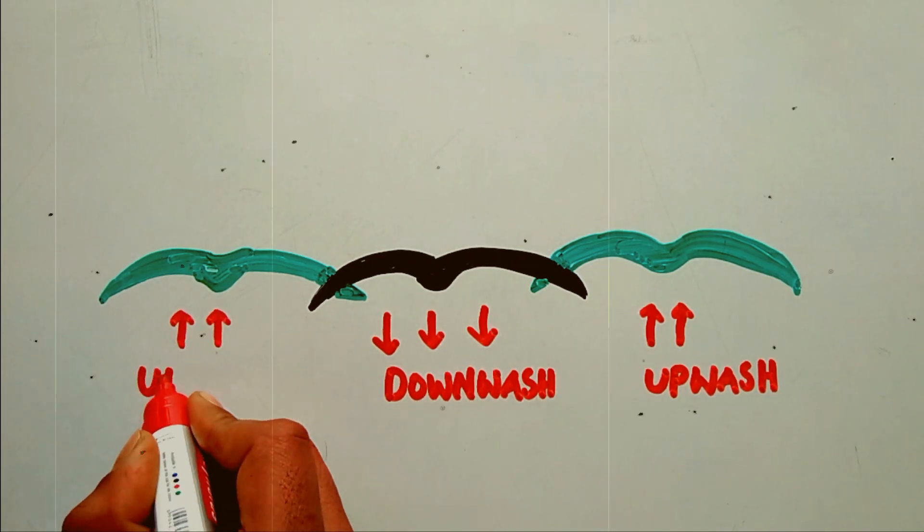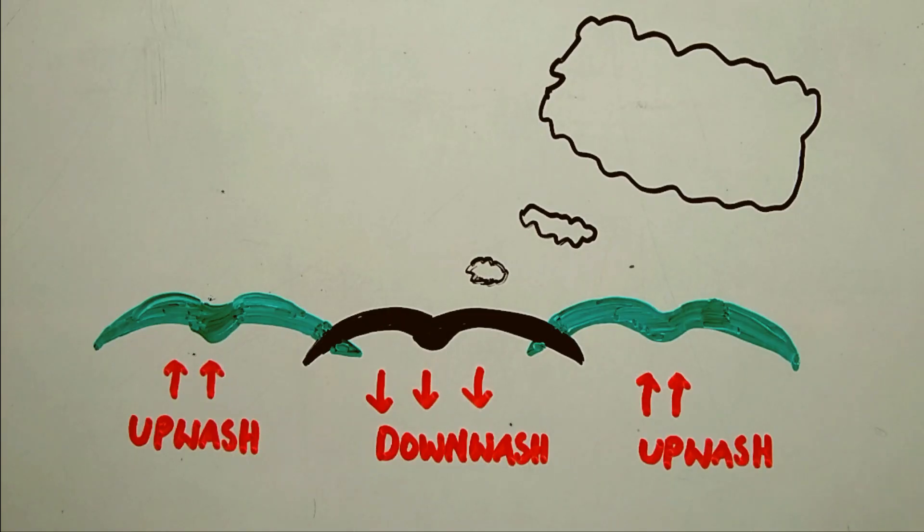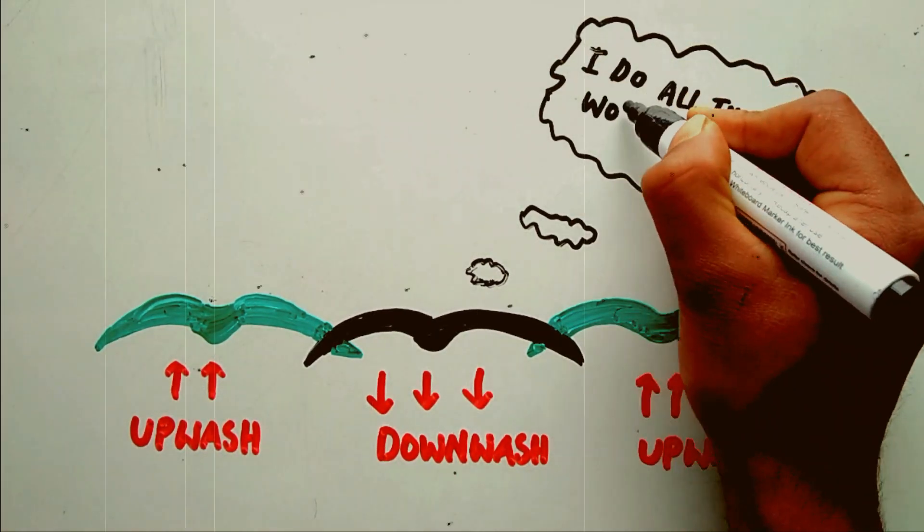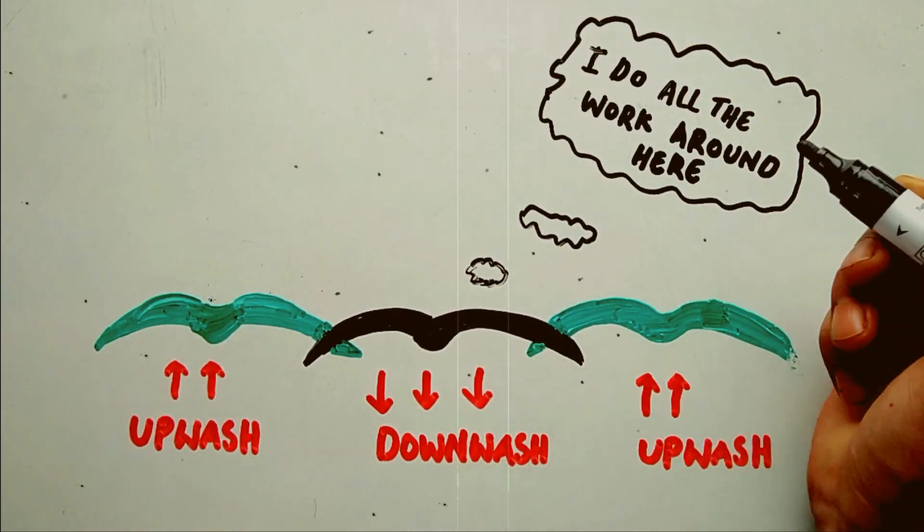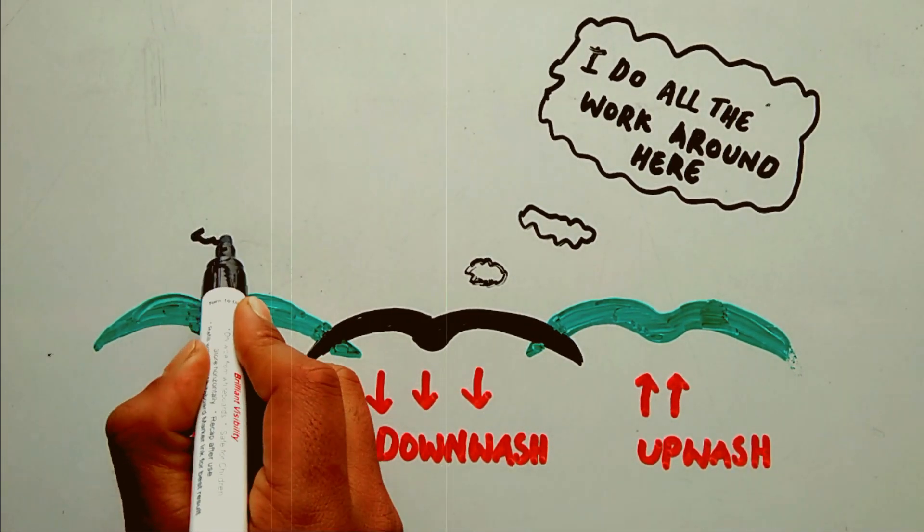Although the front bird experiences some of the upflow from the birds just to the left and right of it, the lead position is usually the most tiring. Probably many of the birds in a flock take turns as a leader.